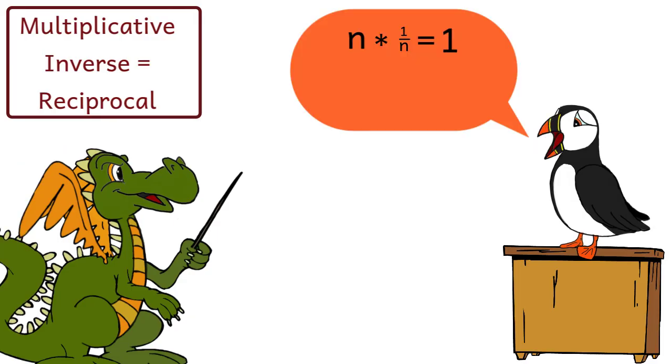So, the reciprocal of a number is the number that when you multiply with the original number, equals 1, and to find the reciprocal, you write the number as a fraction, and then flip it? You got it.